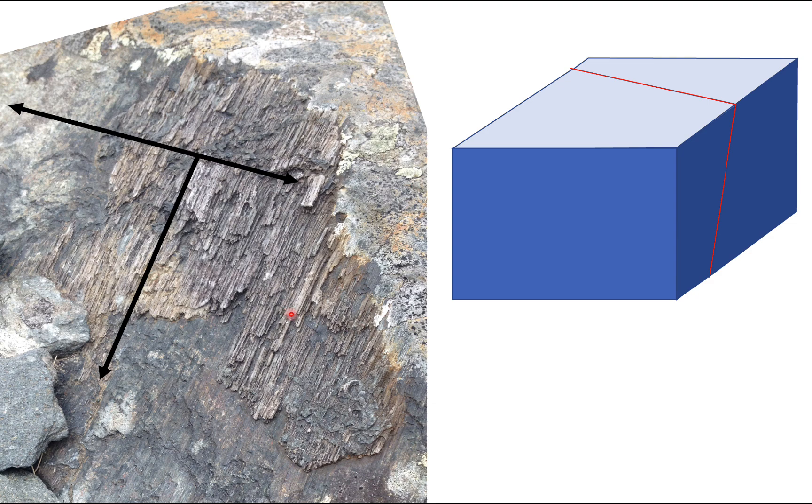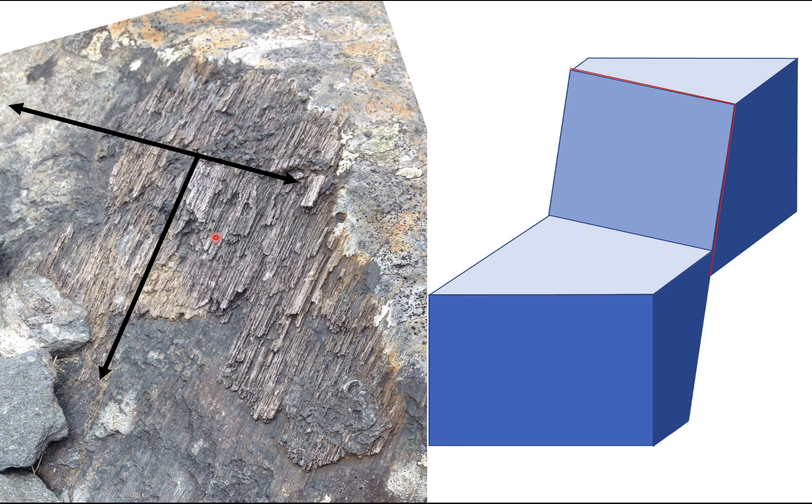And in this case, you can see that all the fibers terminate at their bottom. So that means that the block which is missing has moved downwards. So the sense of motion is like this. So that says it's a normal fault.